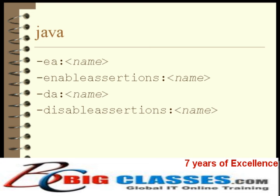This disables all assertions for the named package or class. All assertions are disabled by default, but if an option was specified enabling assertions for, say, an entire package, then this option could be used to disable them for specific classes or sub-packages.